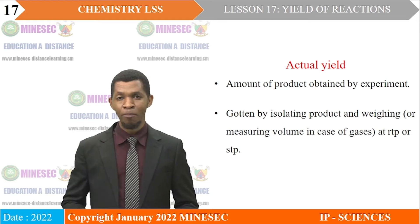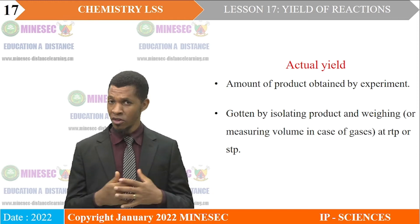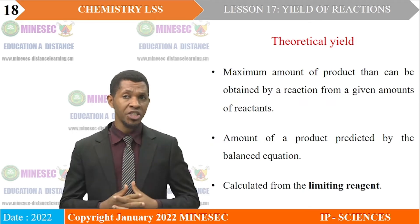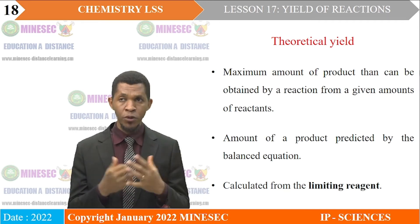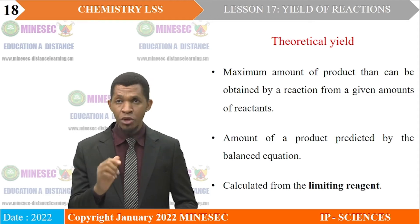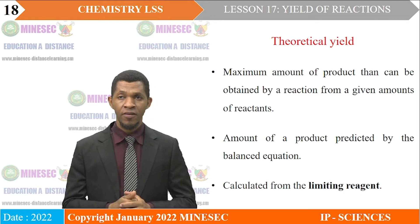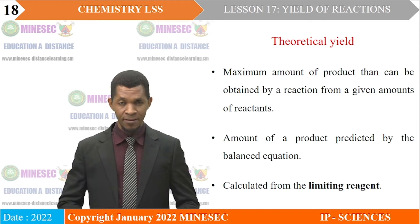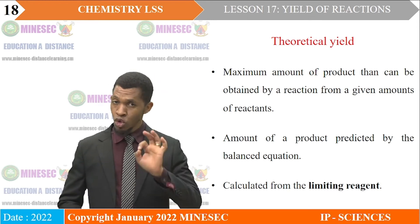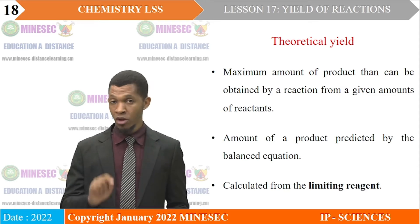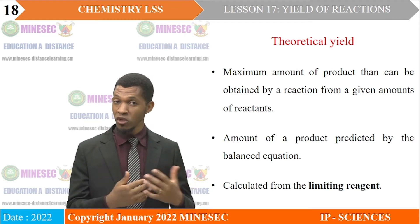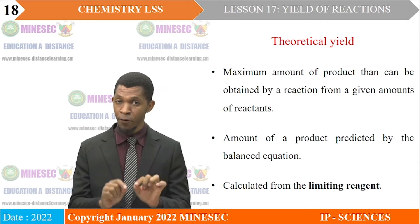The theoretical yield of a reaction is the maximum amount of product that can be obtained from a given amount of reactant. In other words, it is the amount of product predicted by a balanced equation. Theoretical yield is always calculated from the limiting reagent, because the limiting reagent is the one completely used up and it determines the amount of product formed.